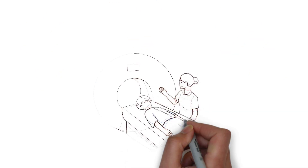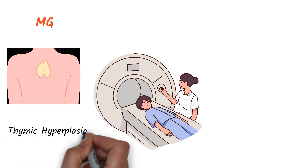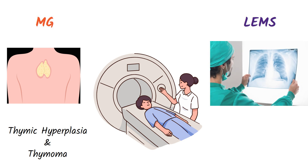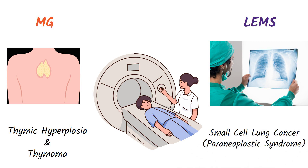It's important to do a CT chest to check for thymic hyperplasia or thymic gland tumours in Myasthenia Gravis patients, as two-thirds of young people with Myasthenia Gravis have thymic hyperplasia and about 1 in 10 have thymomas. Similarly, CT chest or X-ray is important for Lambert-Eaton Myasthenic Syndrome, as it is strongly associated with small cell lung carcinoma.